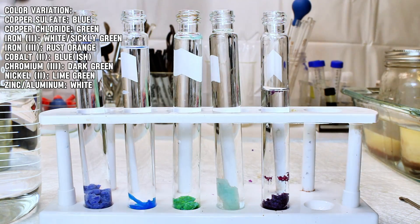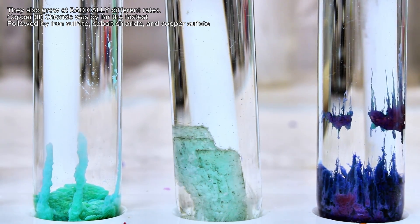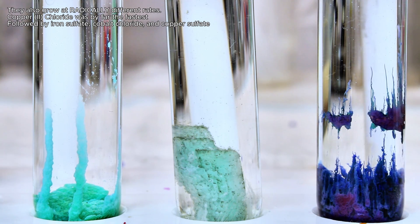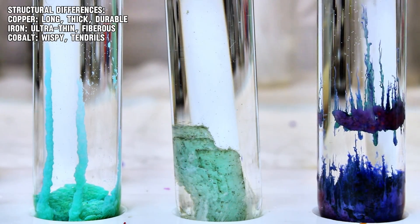I haven't tried vanadium or manganese, but I'd expect those to maybe be able to form some pretty neat colors as well. Now with color aside, the other big difference is the structure of the growth itself, and while they tend to form branching stalagmites, there is a good deal of variation on how these can look.